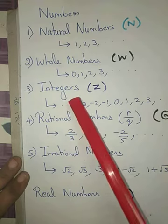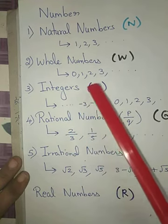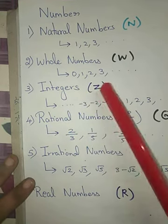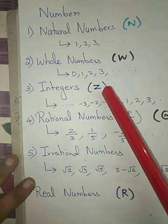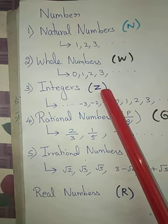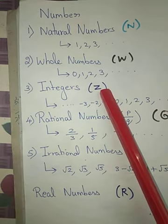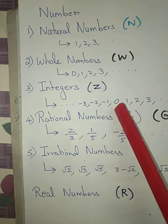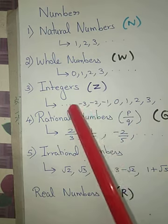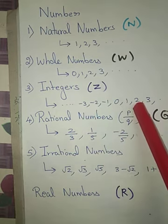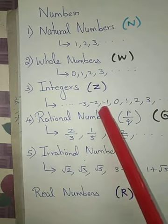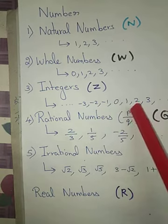The third type of numbers is integers, denoted by Z. Integers include positive numbers, negative numbers, and zero. Some examples of integers are: minus 3, minus 2, minus 1, 0, 1 and so on.